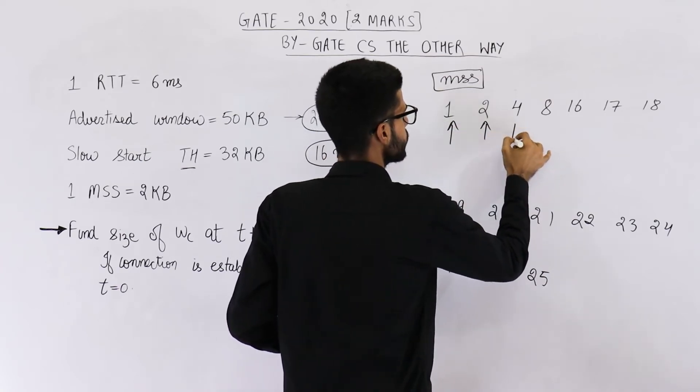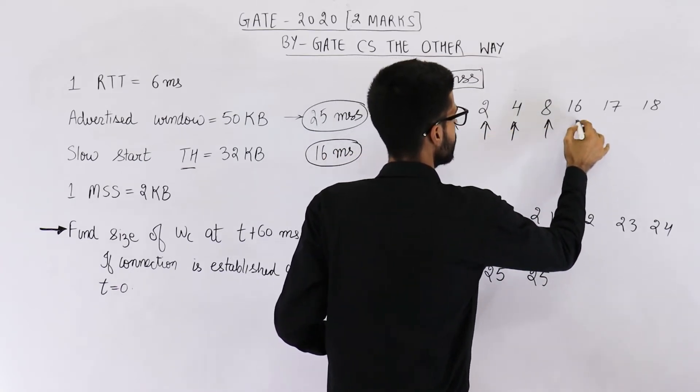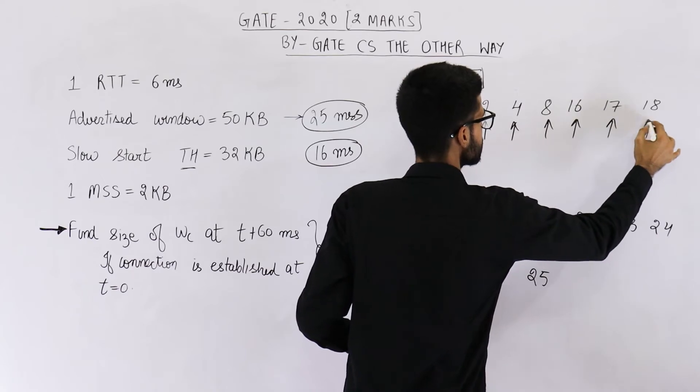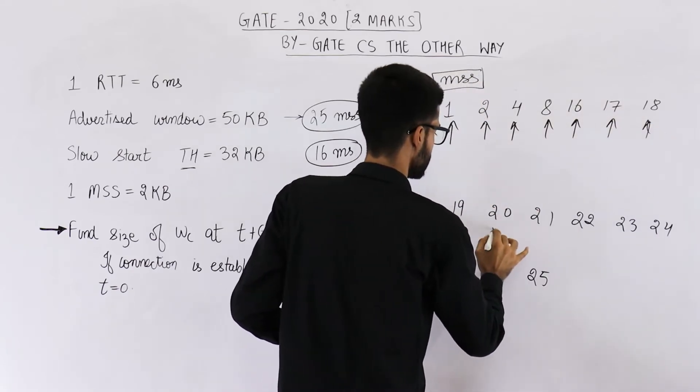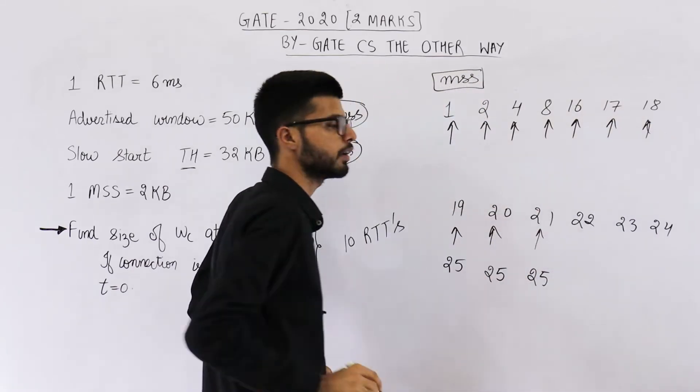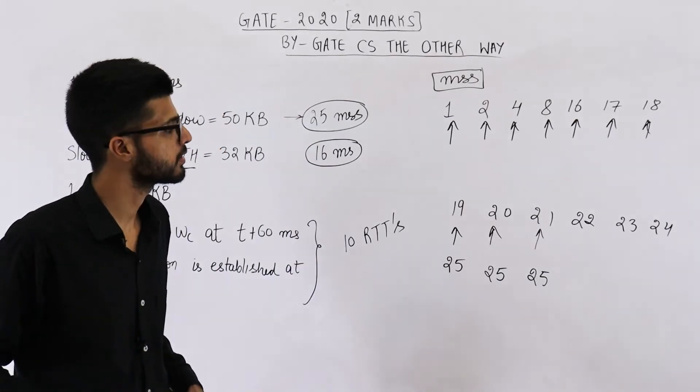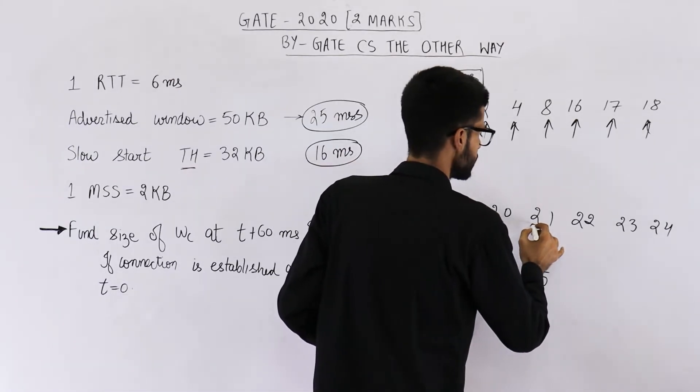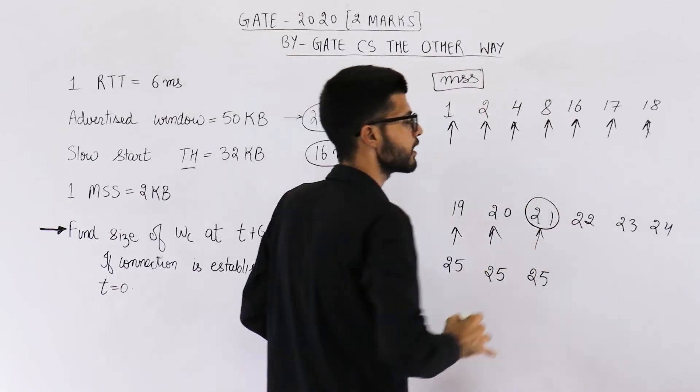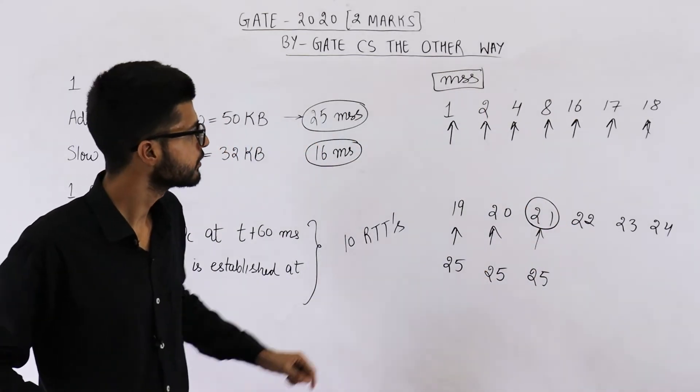1 RTT, 2, 3, 4, 5, 6, 7, 8, 9, 10. Now some of the students may make a mistake. They will think that after 10 RTTs, the size is 21 MSS. This is incorrect.